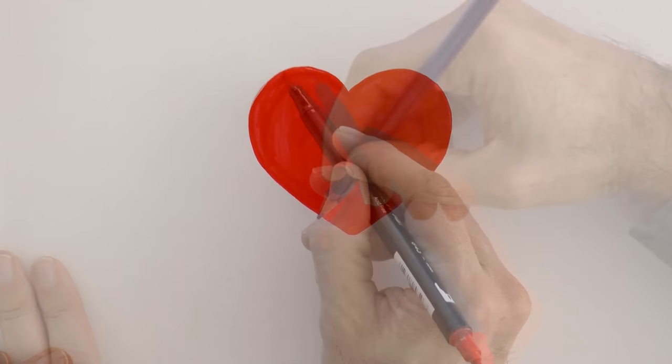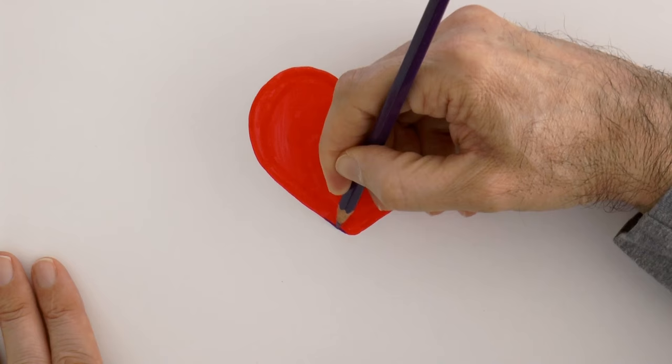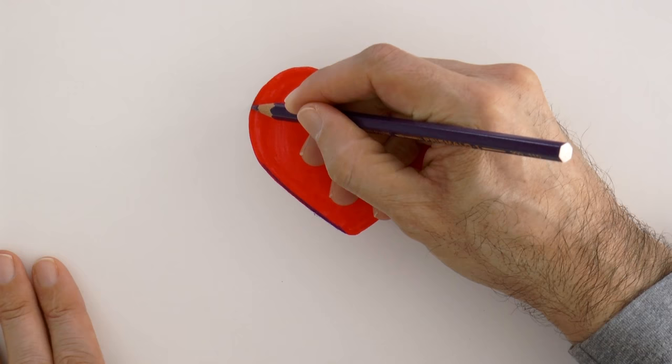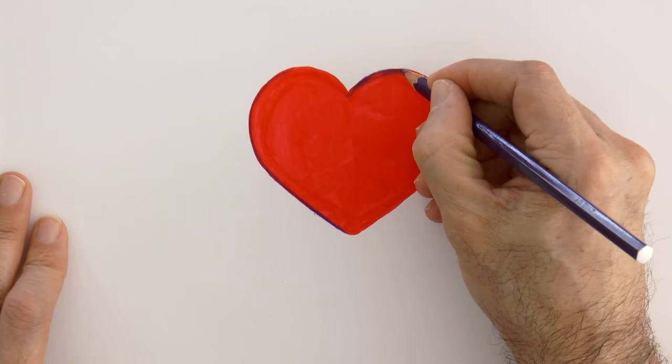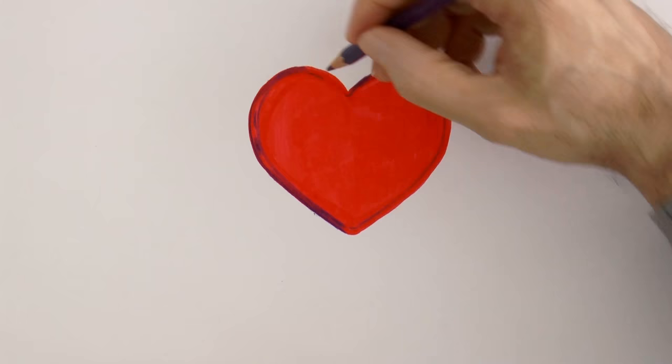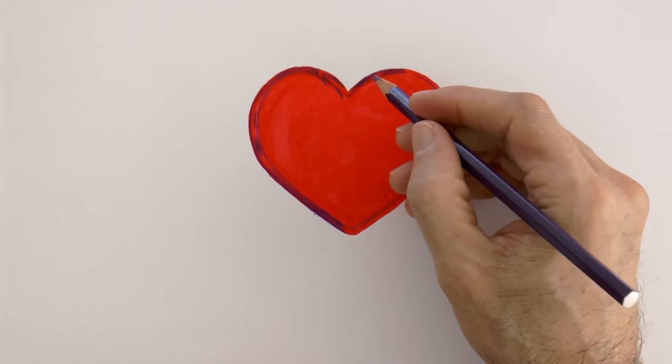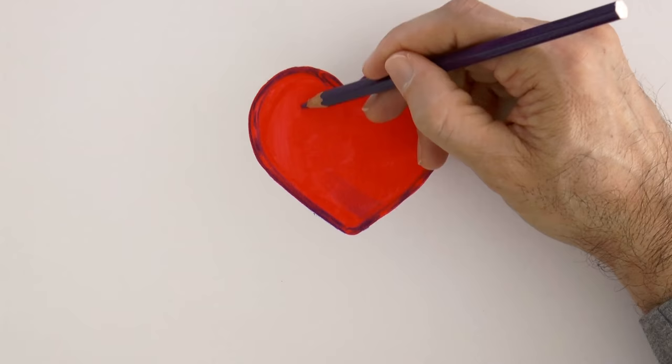And we fill it in flat. Then with a dark purple pencil I go over the edges to create a shade or a dark reflection where the glass turns. This is going to be a glass heart. In some areas I'm leaving the red, I'm not filling in totally continuous and even. That's because we want to create different types of reflections of course.